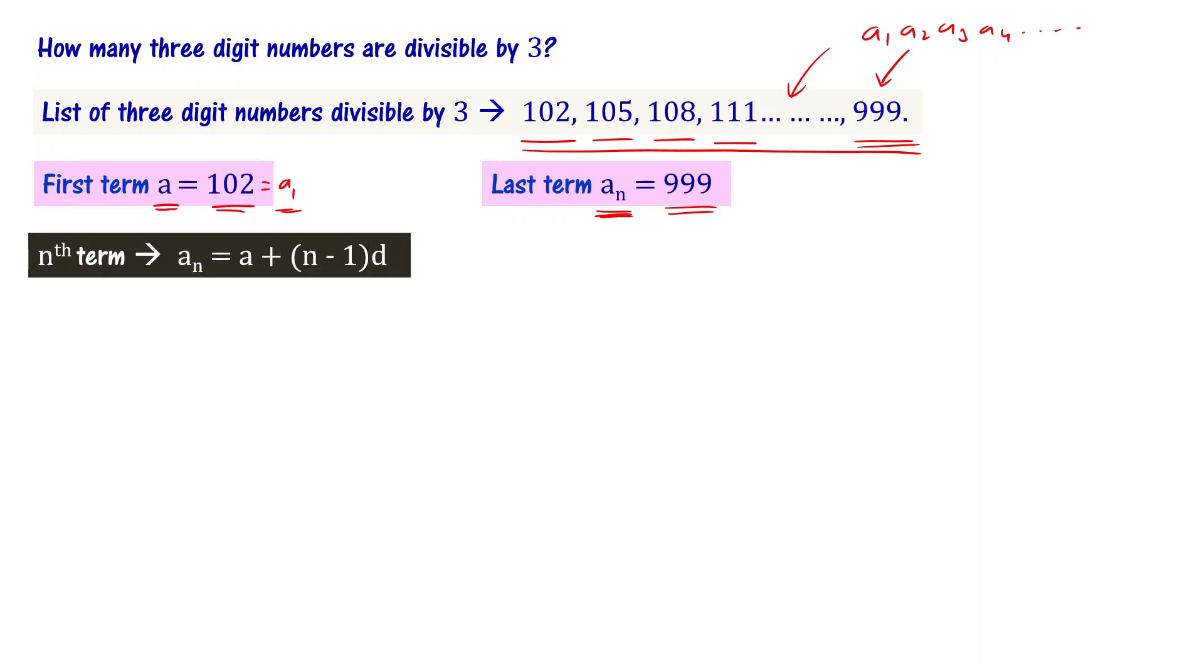The nth term of an arithmetic progression is defined as aₙ equals a plus (n minus 1) times d. Here the a value is known. We need to find n. The aₙ value is already known to be 999. d is the common difference. d equals a₂ minus a₁, or a₃ minus a₂, or a₄ minus a₃, and so on.